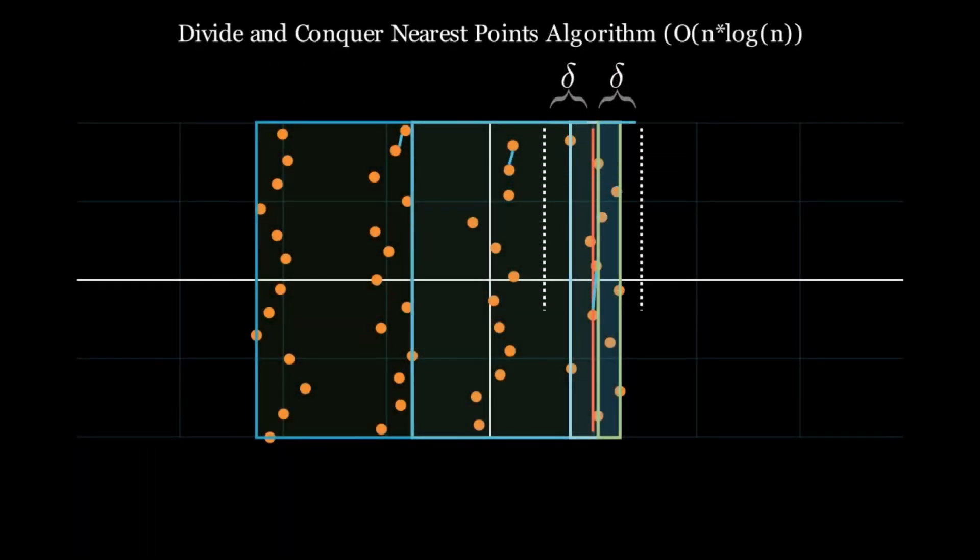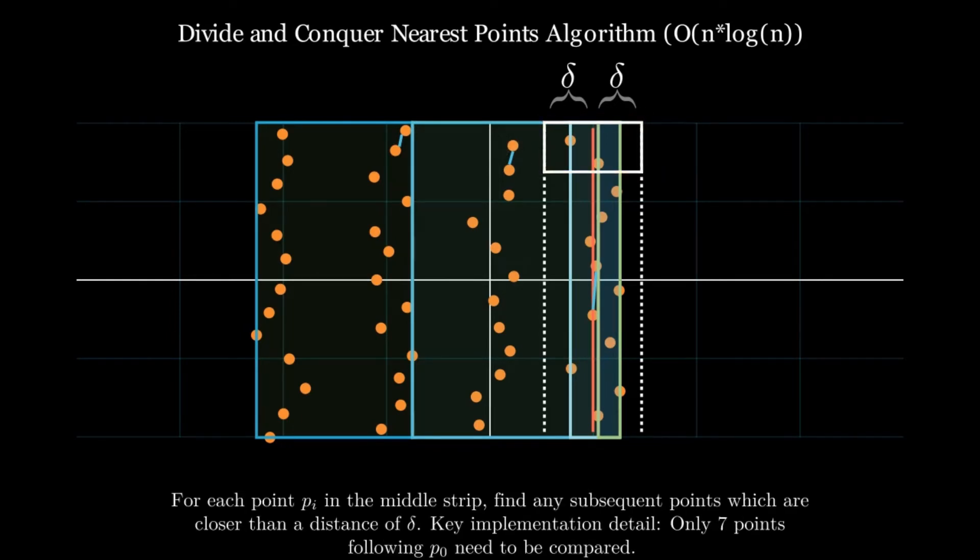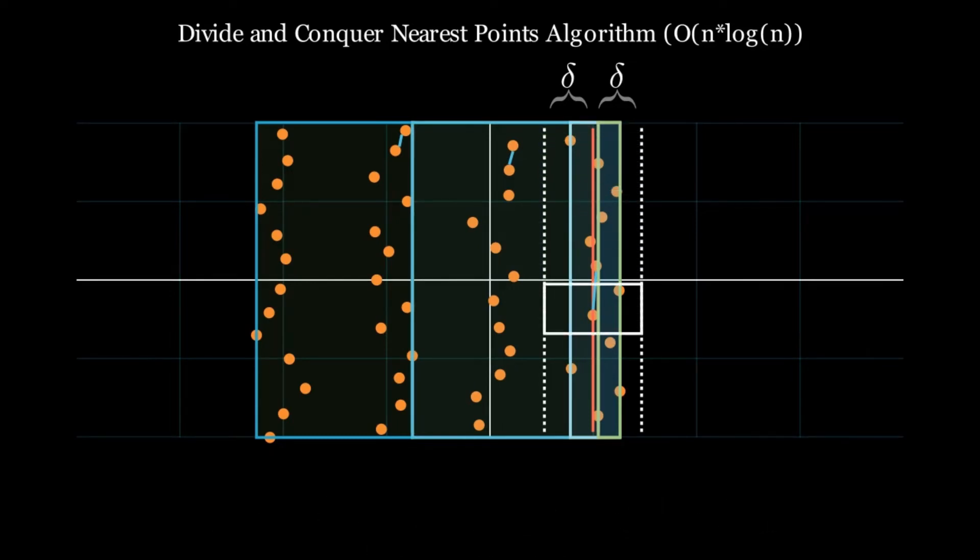Let's see this again. Once we find the closest single partition distance, form a two delta wide vertical strip around the partition midline. Then, for each point in a list of points sorted by Y coordinates, compare that point to the subsequent seven points in the list. This process allows this step of the algorithm to run in linear time.